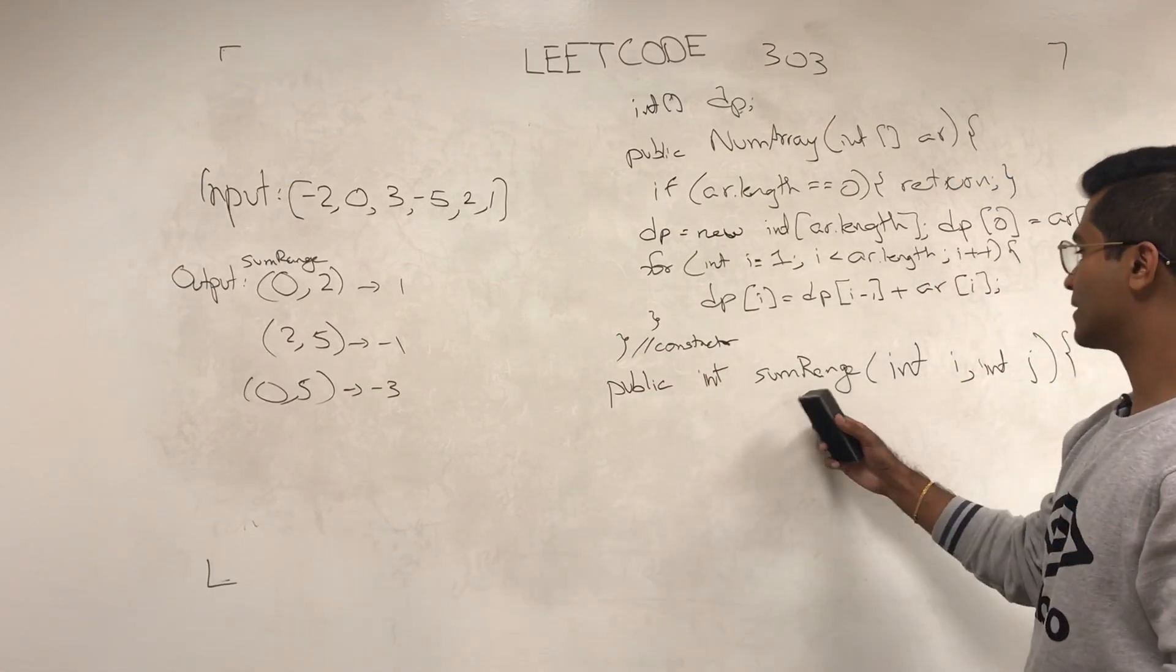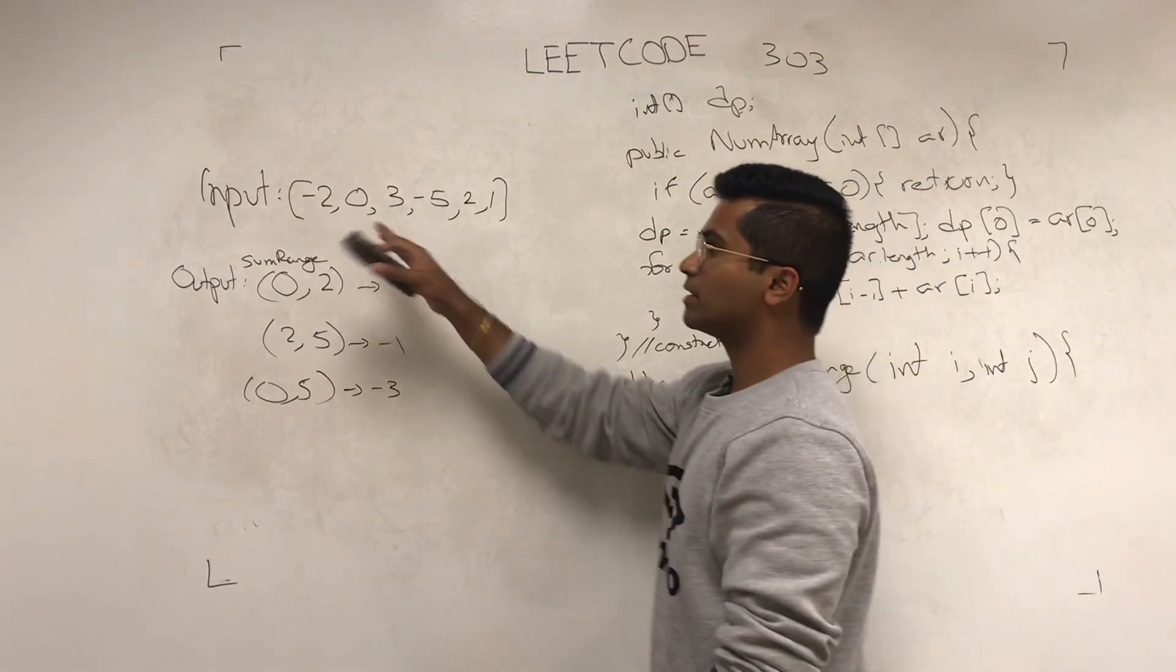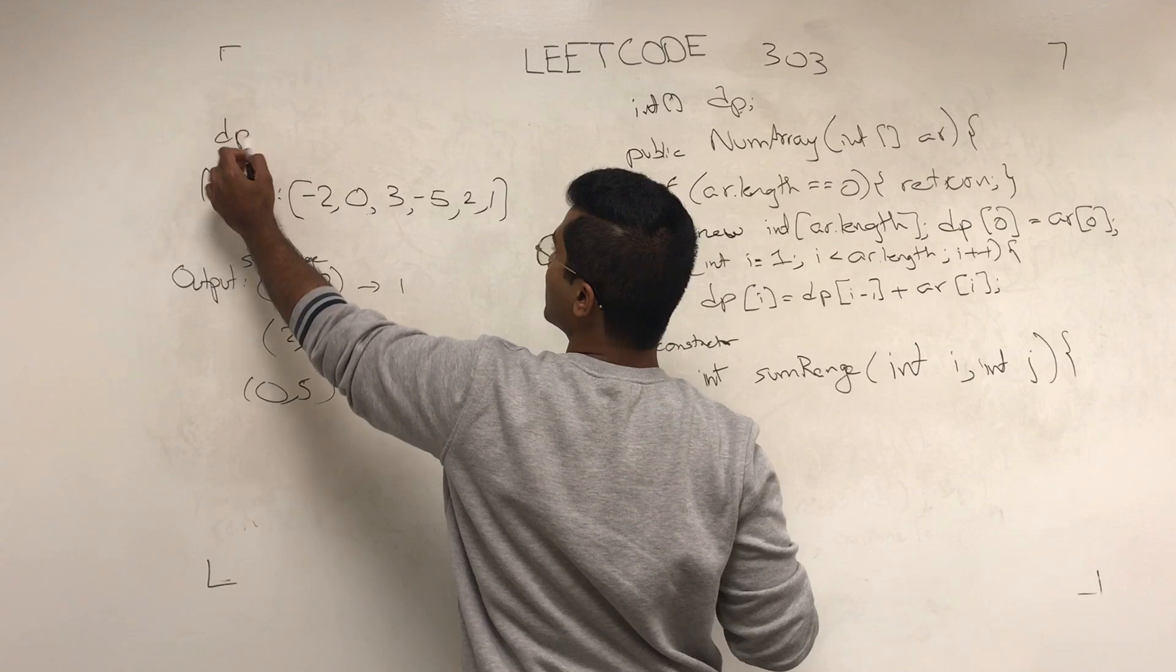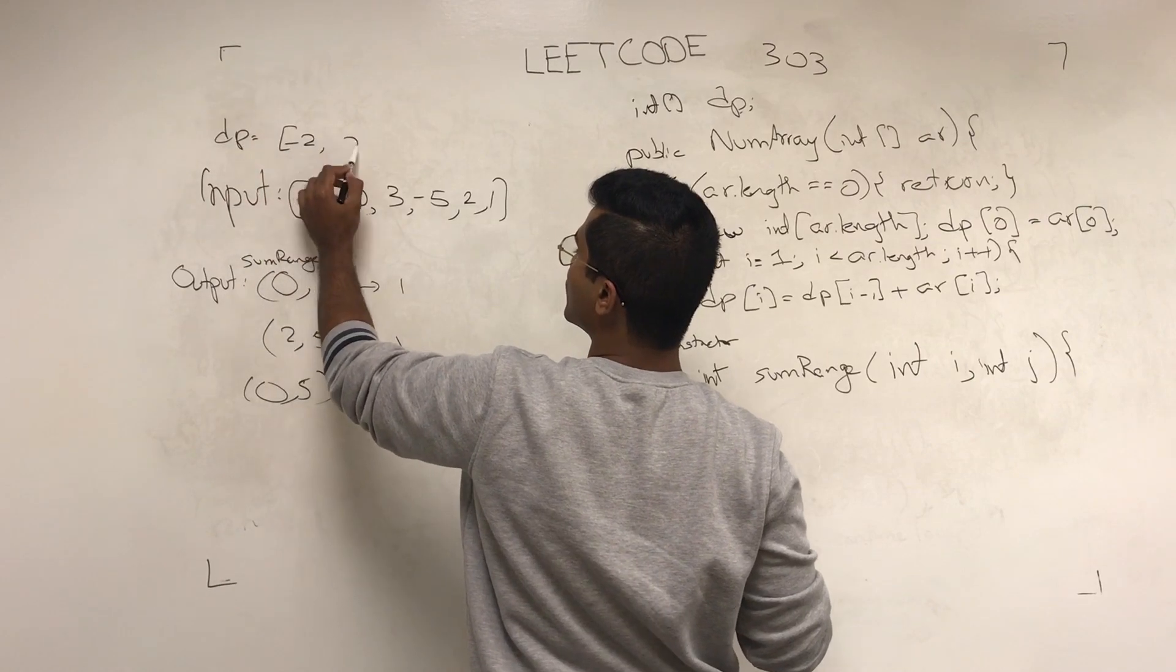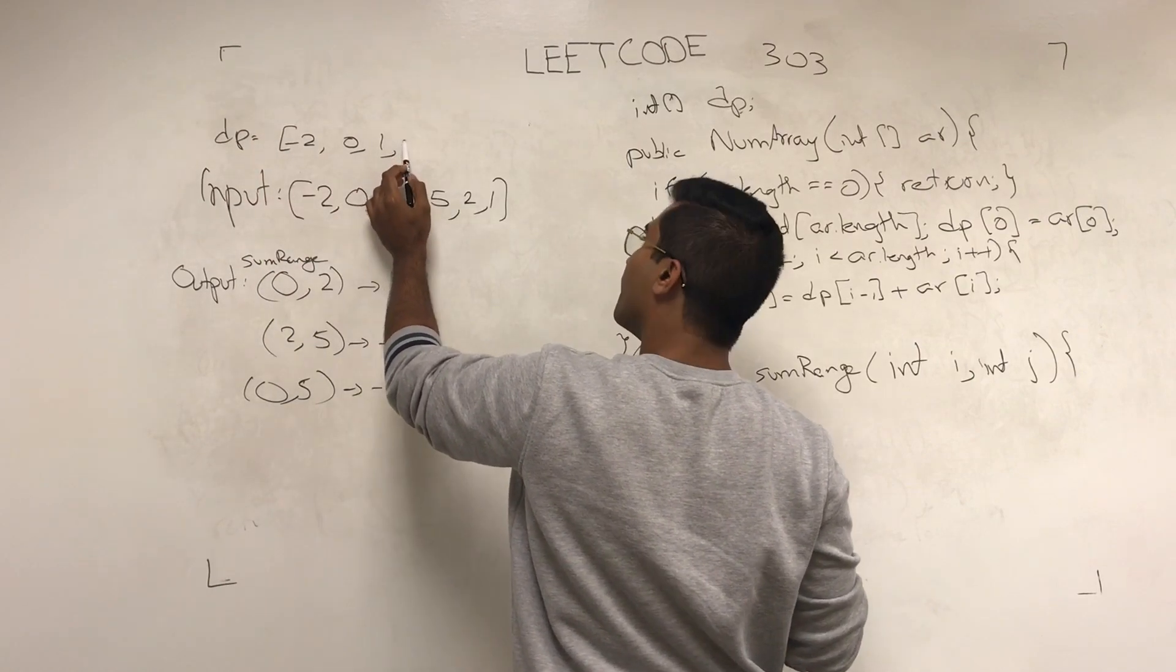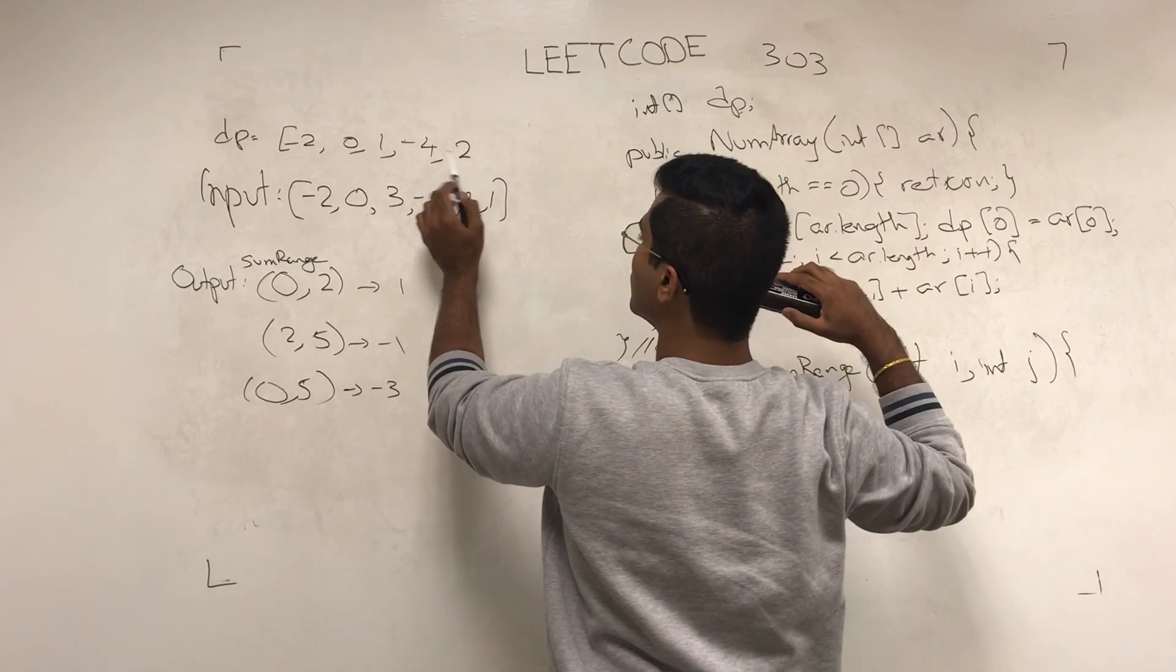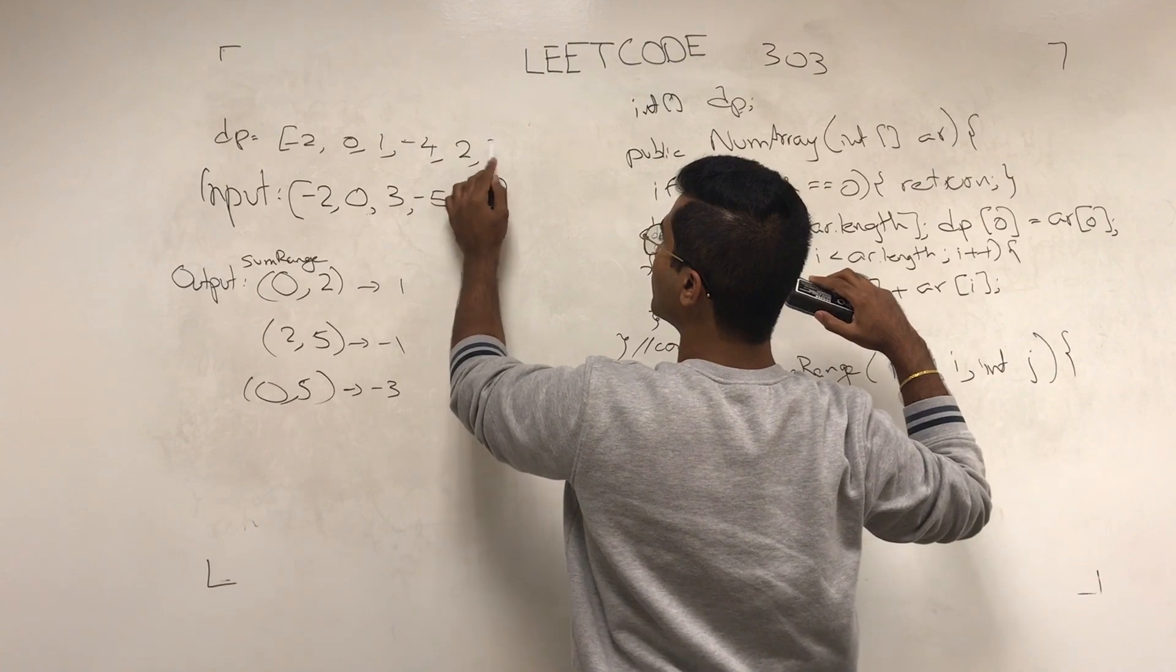Now let me actually write out what the DP array for this example is going to look like. DP would be: -2, 0, 1, -4, 2, -4, 2, and 3.